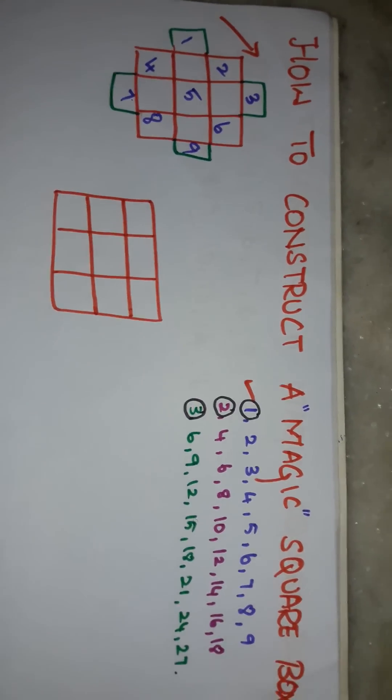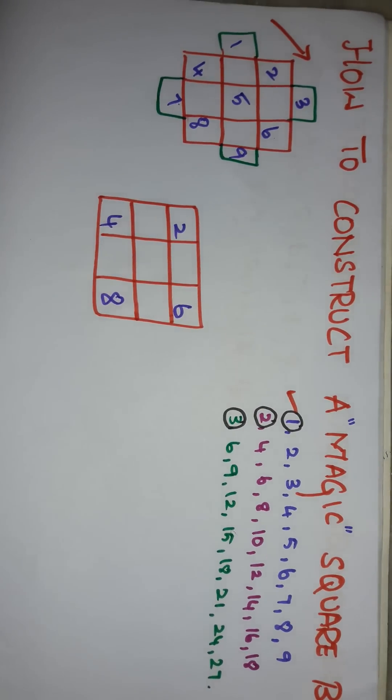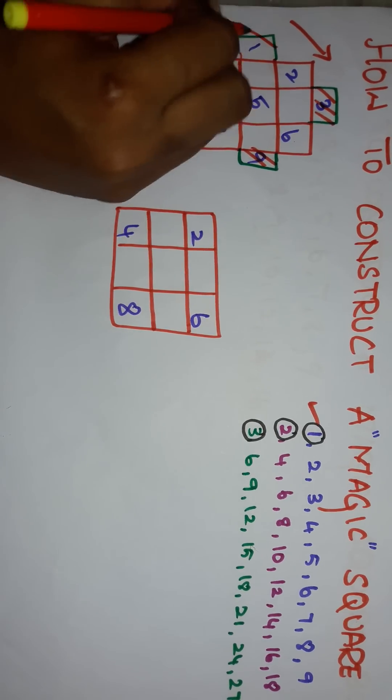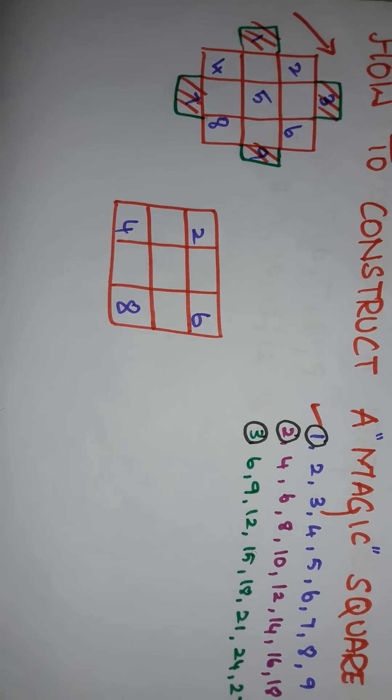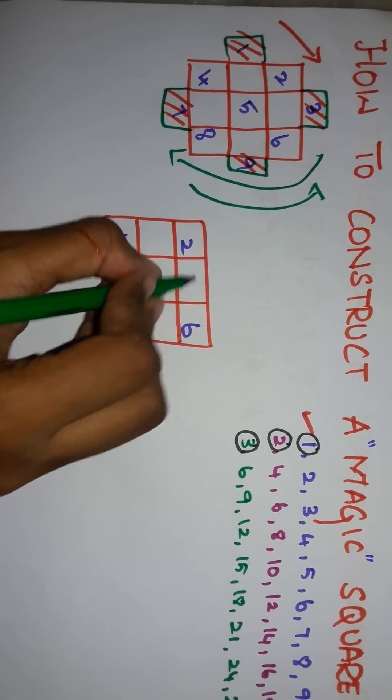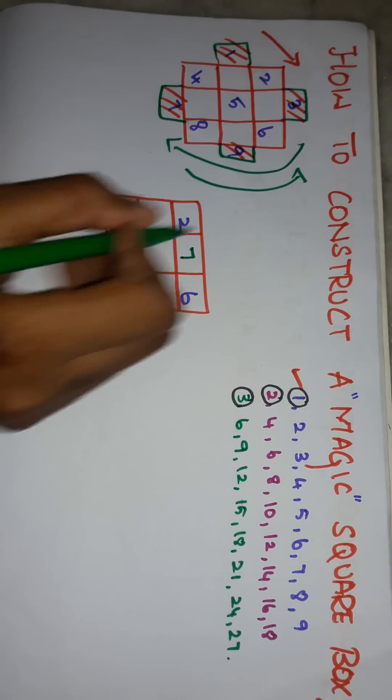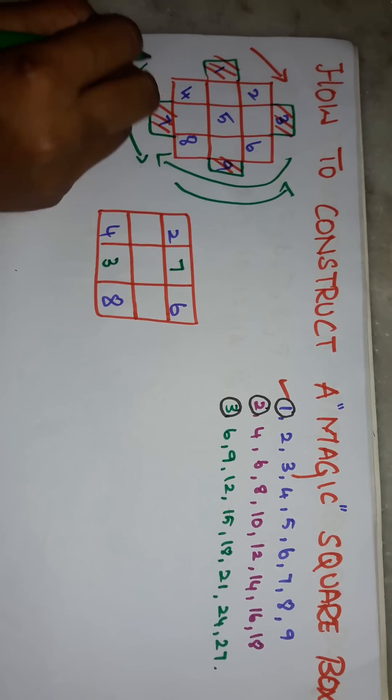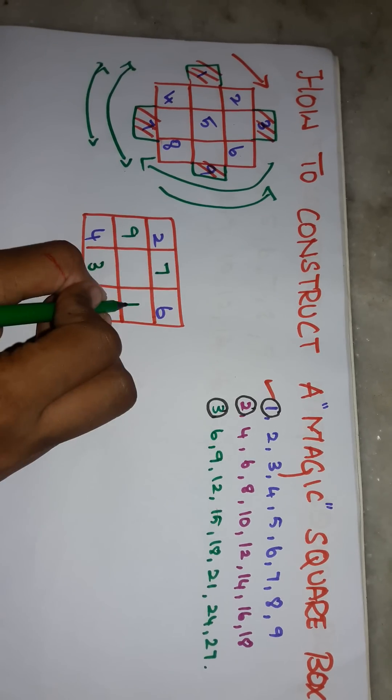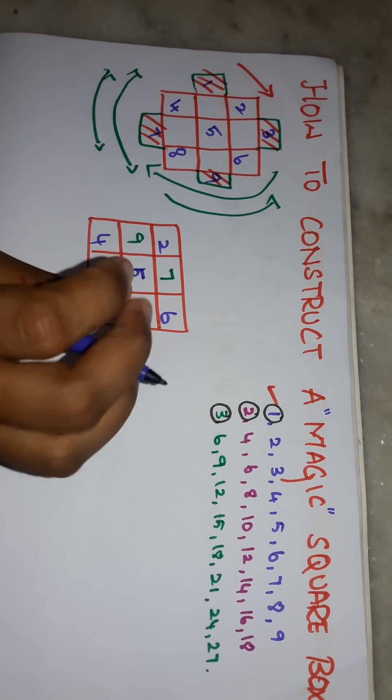And copy the numbers in these corners as the same. But in these extra boxes, we have to interchange the numbers. So, the 7 should be placed here and the 3 should be placed here. Likewise, the left and right side also be interchanged. The 9 should be placed here and the 1 should be placed here. We also copy the center number as the same.